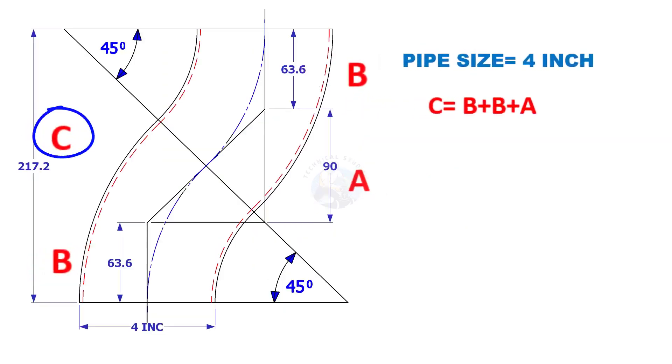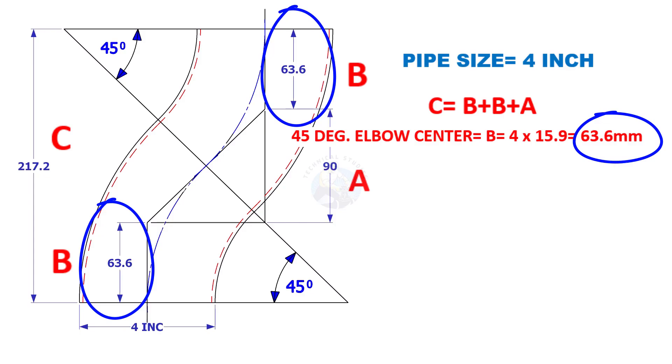The height C is equal to B plus B plus A. Elbow center B is 4 inch multiplied by 15.9. 15.9 is constant. So the value of B equals 63.6 millimeters.